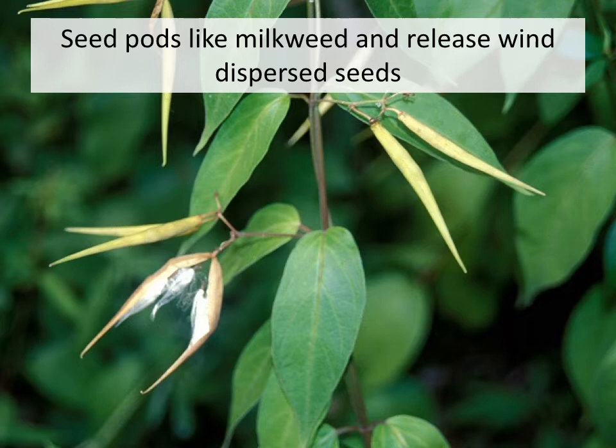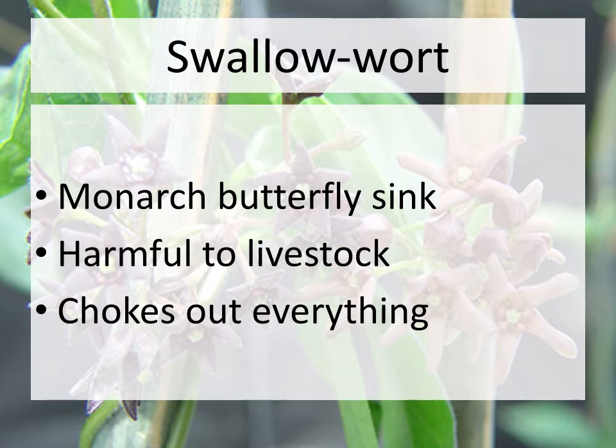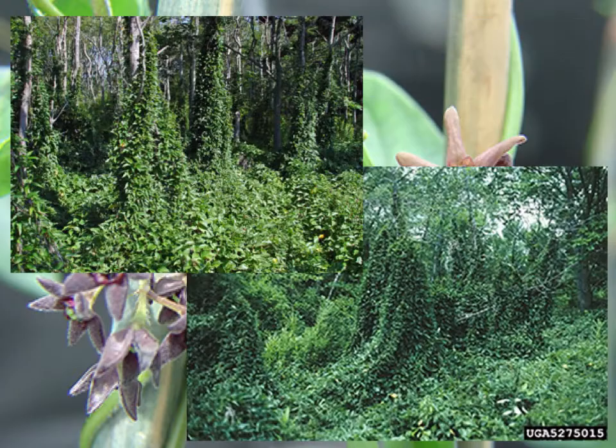Swalloworts have seed pods that release wind-dispersed seeds, much like that of milkweed seed pods. Swalloworts are toxic to the monarch butterfly — it is not clear how often they lay their eggs on swallowort, but when they do, the caterpillars will die after feeding. The roots of swallowort contain a chemical that is toxic to livestock when ingested. And like other invasive vines, swallowort will choke out all nearby vegetation.